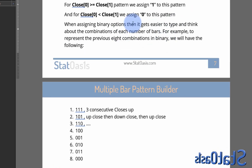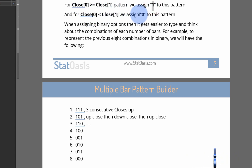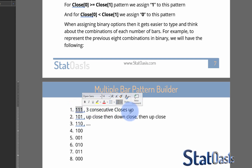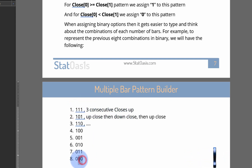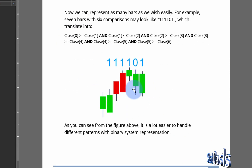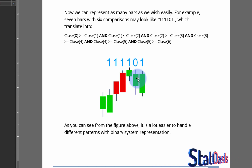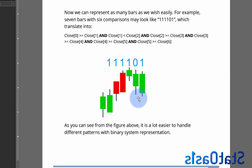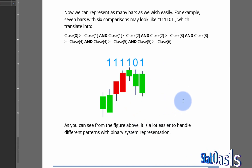We can simplify further by representing 'close greater than close of one bar ago' as one, and 'close lower' as zero. Three ones in a row means three consecutive closes up; three zeros means three consecutive closes down. So a pattern like 1-1-1-0-1 is easy to read: one means the close is higher or equal to one bar ago, zero means the close is lower. This is a lot easier to represent and write about.